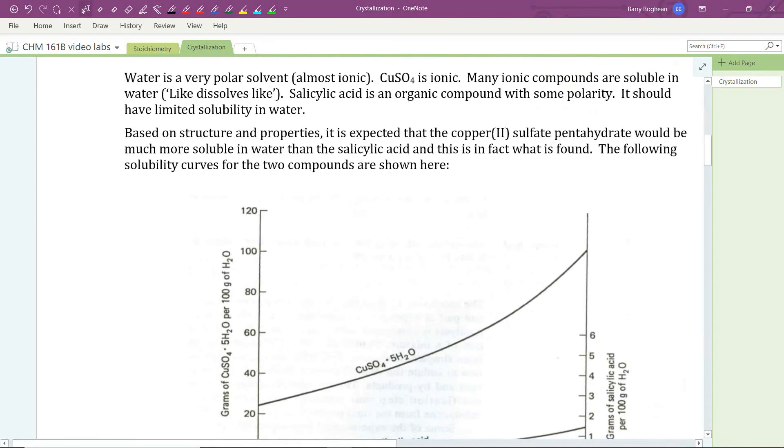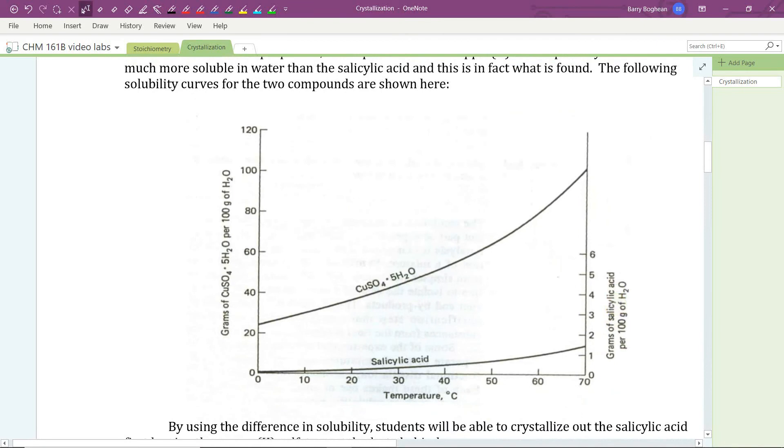Take a look at the graph below. This solubility graph shows the temperature from 0 to 70 degrees on the x-axis in degrees Celsius. The left-hand y-axis shows the solubility of copper(II) sulfate pentahydrate—grams of it per 100 grams of water. At 0 degrees C the solubility is about 24, 25 grams.